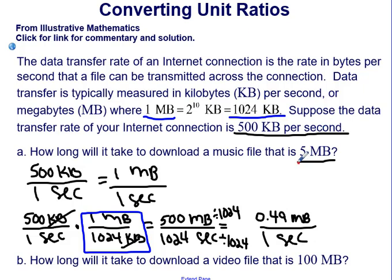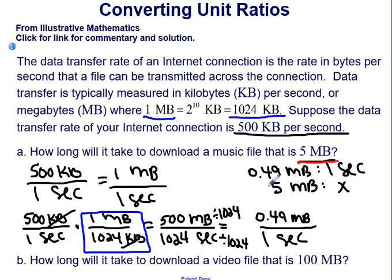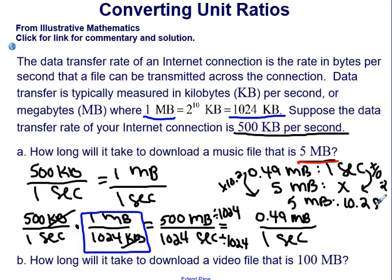Now we want five megabytes. We have 0.49 megabytes in one second, so five megabytes is an unknown number of seconds. To go from 0.49 to 5, we multiply by 10.2, so we also multiply one second by 10.2. Therefore, five megabytes will take 10.2 seconds to download — that is our final answer using the conversion factor.